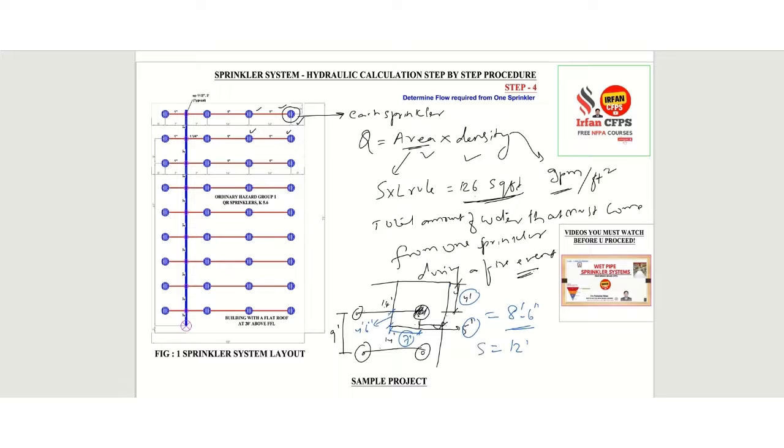Here S will be 12 feet, L will be 8 feet 6 inches. In actual scenario, this will be the coverage area for this particular sprinkler. If you calculate 12 feet multiply by 8 feet 6 inches, then we will get around 102 square feet.